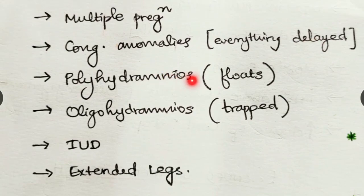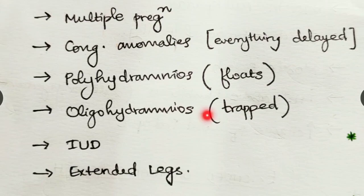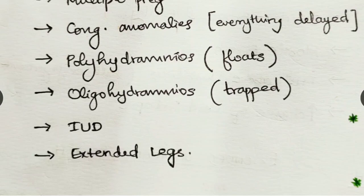Polyhydramnios — excess amniotic fluid — causes the child to float and take any position, leading to breech. Oligohydramnios — inadequate fluid — traps the child, preventing rotation into a normal vertex position. Intrauterine fetal demise (IUFD) means no development, maturity, or rotation occurs. Extended legs also alter position, preventing the child from attaining the correct alignment.